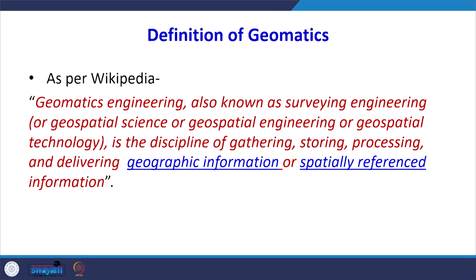Wikipedia defines geomatics engineering, also known as surveying engineering. In some literature, the words geoinformatics, geospatial engineering, or geospatial technology are used — they convey almost the same meaning. The whole idea behind this terminology is to gather, store, process, and analyze data of the earth surface, which we call geodata or geographical information. This geographical information is geo-referenced, especially referenced with respect to some coordinate system.